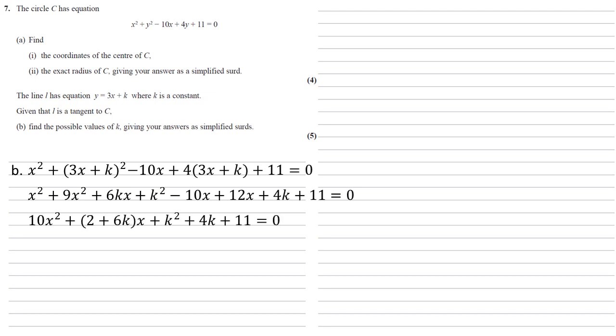Collecting together our like terms gives us 10x squared plus 2 plus 6k lots of x plus k squared plus 4k plus 11 equals 0.